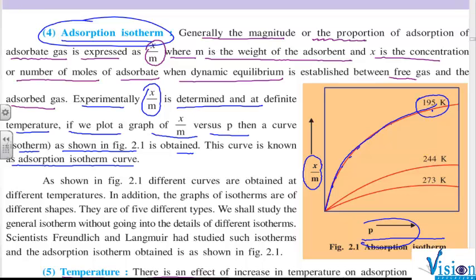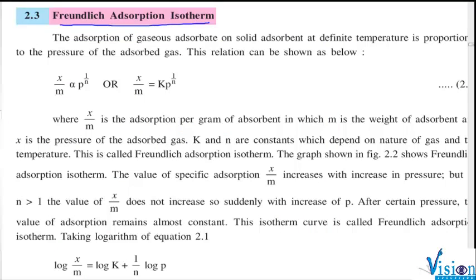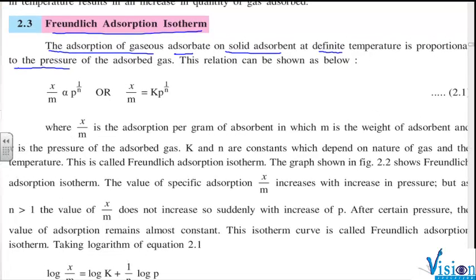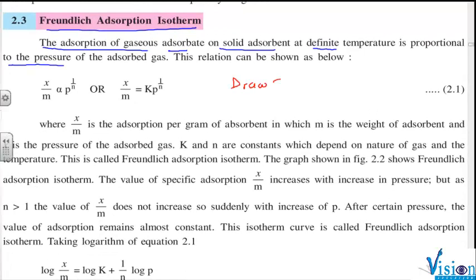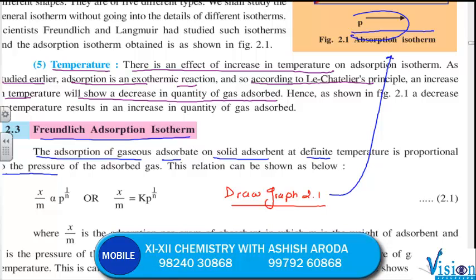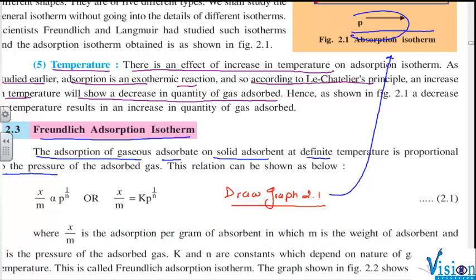One is Freundlich and second is Langmuir. Freundlich adsorption isotherm - see, the adsorption of gaseous adsorbate on solid adsorbent at a definite temperature is proportional to the pressure of the adsorbate gas. Adsorption is directly proportional to pressure.